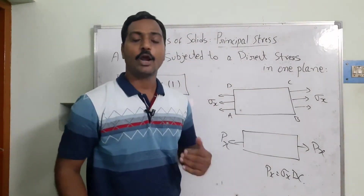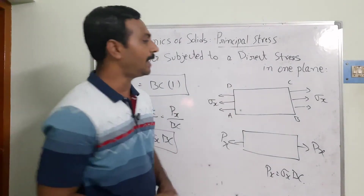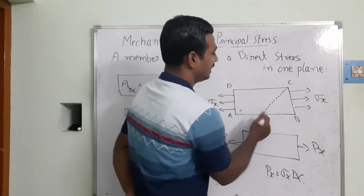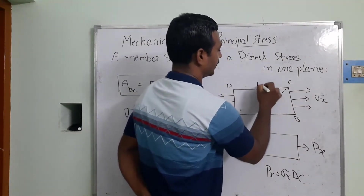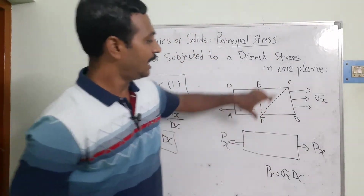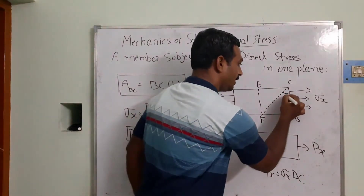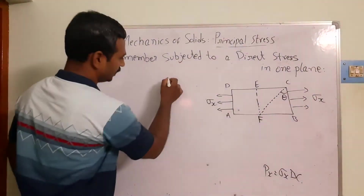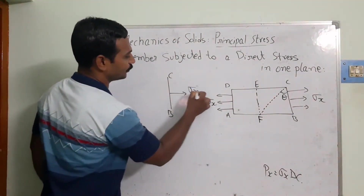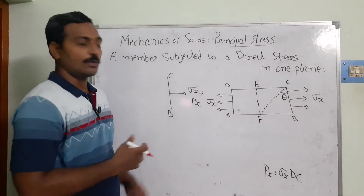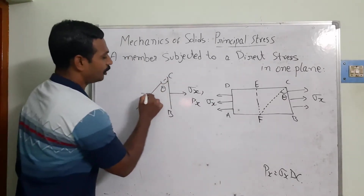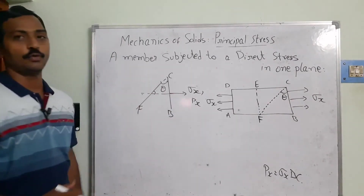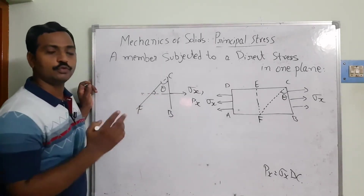Now instead of the normal plane, I want to consider an oblique inclined plane. This oblique plane is inclined to BC — I call the endpoints E and F — so EF and BC are parallel to each other, and FC is inclined, making an angle theta with the cross-section area. There is an inclination between the FC plane and the applied load, since extending the line of action shows the angle theta between them.